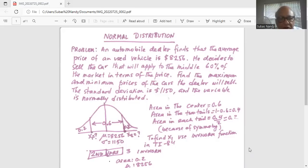Area in the center is given as 0.6. We do not know the two boundaries X1 and X2 on the horizontal axis from which the vertical lines are drawn to meet the normal distribution curve so that the area in the center is 0.6. So area in the two tails is 1 minus 0.6 is 0.4. Because the variable is normally distributed, the left half of the curve is equal to the right half of the curve. So area in each tail is the same, which is 0.4 divided by 2 is 0.2.